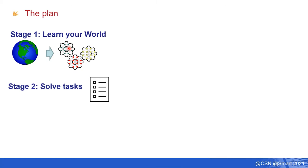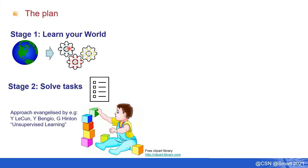Only after we've learned our world model will we start solving particular tasks. This two-stage approach is well-recognized and has been evangelized in recent years by prominent names in AI and machine learning, who argued in the context of unsupervised learning that this way forward is the holy grail of intelligence. I also want to connect this to how advanced biological life solves the problem of sequential optimal decision making.